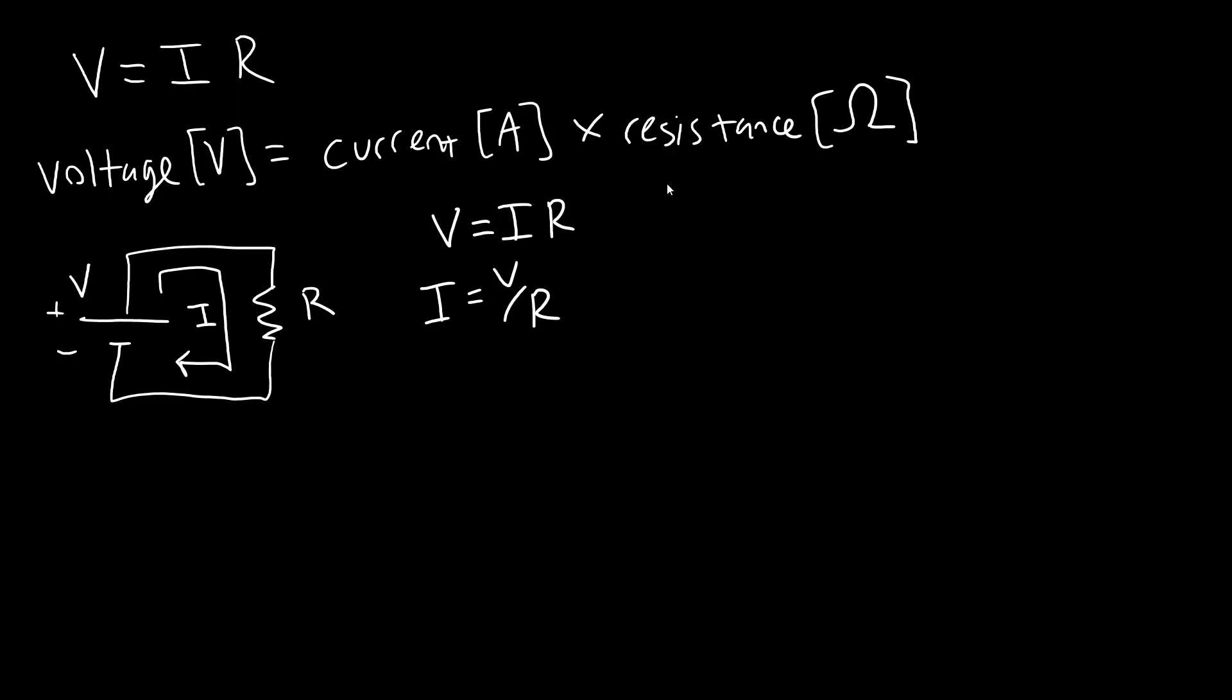Now, before we do any quantitative examples with numbers, let's just look at the qualitative or the proportional relationships in this equation. So V equals IR. Voltage is proportional to both the current and the resistance. Or if we flip it around like this, current is proportional to the voltage but inversely proportional to the resistance. So I'll ask what happens, for example, for a fixed or constant V, what happens if you increase the resistance? Does the current go up or down? Take a look at the equations, pause the video, and see if you can figure that out.